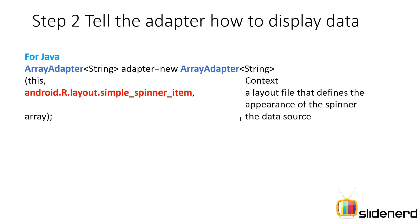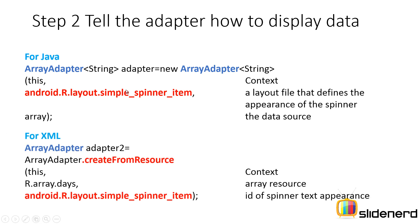Step 2 — tell the adapter how to display the data. If your array is in Java, you create: ArrayAdapter adapter = new ArrayAdapter with three parameters: first, a context; second, a layout file that defines how a single item inside the list appears for a spinner; and third, the data source itself.